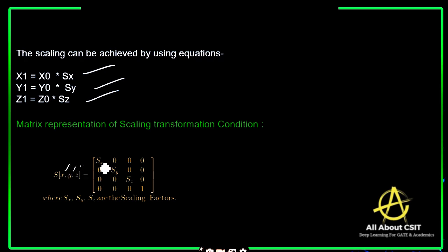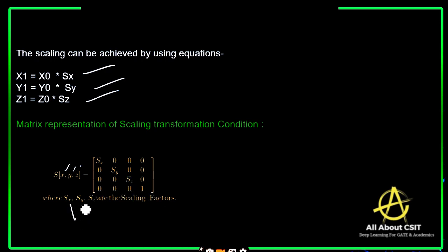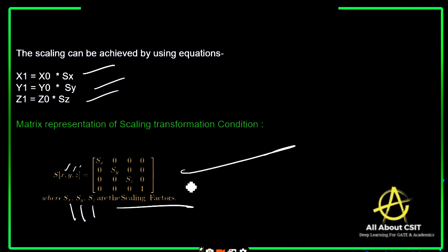The matrix representation of the scaling transformation uses a 4×4 homogeneous matrix. The scaling matrix has SX, SY, SZ along the diagonal and zeros elsewhere, with 1 in the bottom-right corner. This gives: [X, Y, Z, 1] multiplied by the matrix with SX, SY, SZ on the diagonal. SX, SY, SZ are the scaling factors.